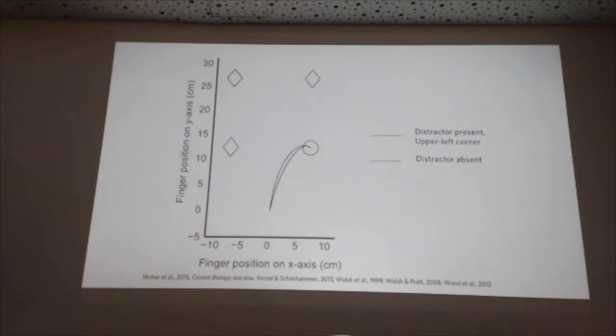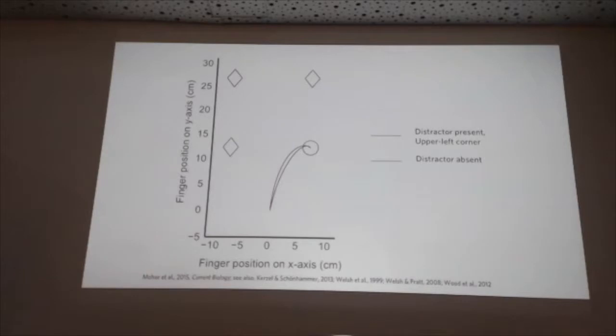The work I want to talk about now is a bit different. We took the same paradigm and started looking at behavior in younger children. One of the cool things about the reaching technique is that it's a lot easier to tell a five-year-old to point to the diamond than to ask them to report the orientation of a line inside a unique shape — I actually have trouble with that instruction even with undergrads. The question is: can we get kids to do this task, and if so, what developmental trajectory would we see for something like the pull of a salient object?